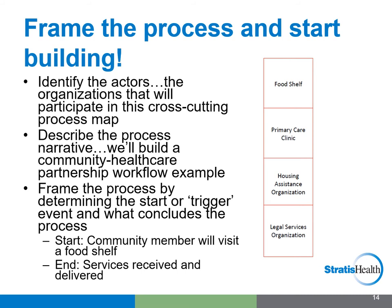To help you understand the step-by-step process of creating a swimlane process map, we'll use the cross-sector, multi-organization example shown previously that will follow an individual on their journey to obtain social services as well as health care services. The community member starts out by seeking food assistance at a local food shelf. They end their visit to the food shelf having a conversation with staff who recognizes their need for health care services and refers them to a local primary care clinic.